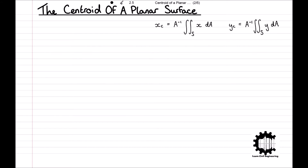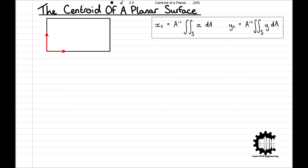To demonstrate how XC YC is found using these equations, we will consider the simple case where S is a plane rectangular surface with an area A equal to LW, as we can see in the diagram. Here, XY denotes the coordinate directions in the plane of S, with the origin located at the bottom left-hand corner of S. Therefore, the surface S consists of the points X between 0 and W, and Y between 0 and L.